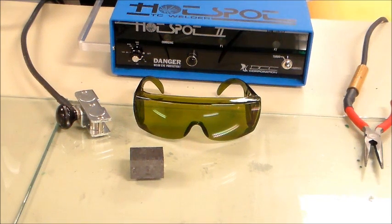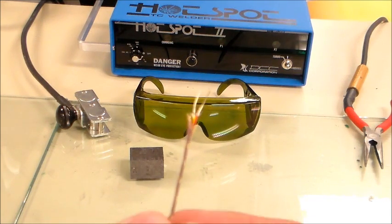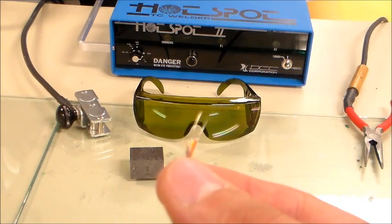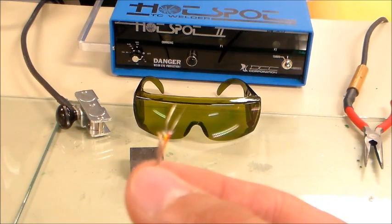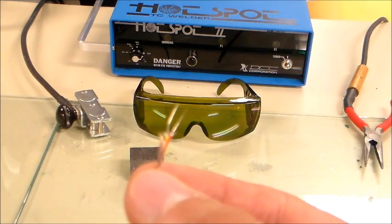The first step to weld a thermocouple is to make sure that your thermocouple wire does not have any insulation on its ends. Then we can proceed to start welding the thermocouple.